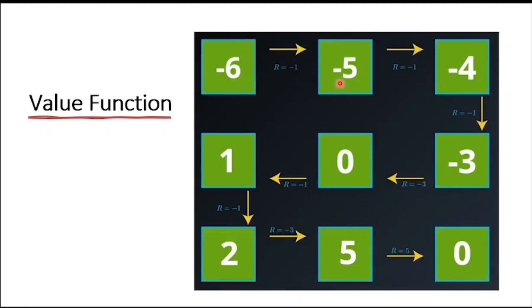If the agent starts one location over to the right, the return would be minus 5 under the same policy. We can continue doing this for every state in the world, keeping track of the return that follows under this policy. The goal state is considered to result in a return of 0, since the episode ends immediately and no reward is received. We refer to the function that yields the likely return for each state if the agent follows the policy as the state's value function. The value function is specific to a particular policy — changing the policy will change the value function. Therefore, the value function estimates the expected cumulative reward of being in a particular state.